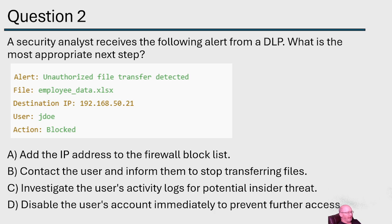The user was J. Doe and the action was blocked. Option A: add the IP address to the firewall block list — it's an internal IP address, so that's not something we'd do. Option B: contact the user and inform them to stop transferring files. We would definitely talk to them, but that wouldn't be the most appropriate next step — and they could say they didn't try to do that.